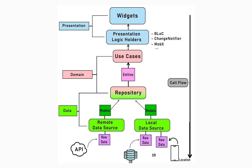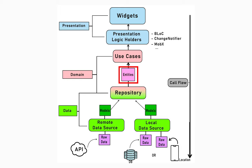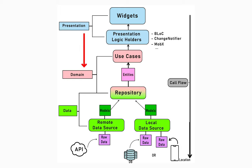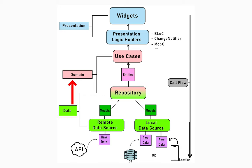A specific use case — for example, send message — utilizes entities, in that case the message entity, to send a message. That use case depends upon the contract repository to do that specific job. The call flow goes from the presentation to the domain layer, which shows that the presentation layer depends upon the domain layer. That repository is then implemented in the data layer.